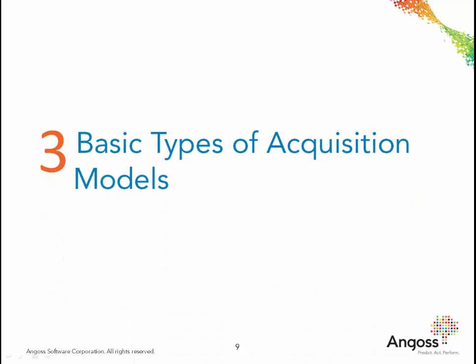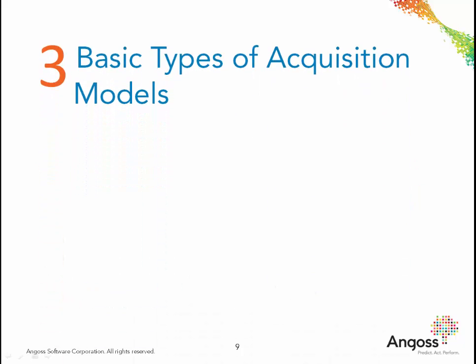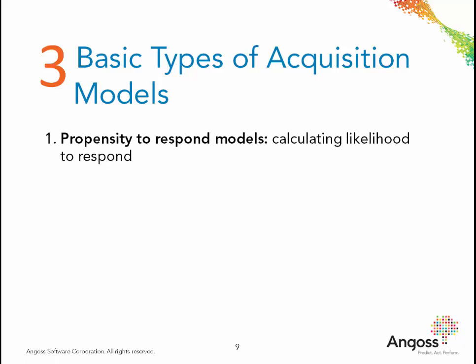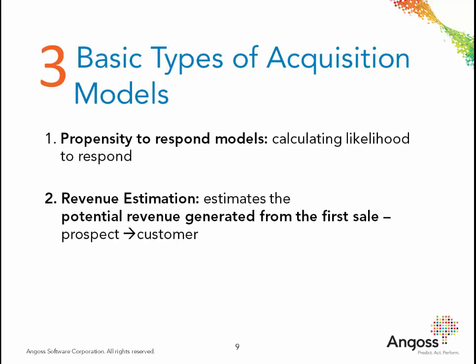There are three basic types of acquisition models. These models are sometimes called propensity models. The first is a propensity to respond model, which focuses on calculating the likelihood to respond to an offer. The second type of propensity model focuses on estimating the potential revenue generated from the first sale when converting a prospect to a customer.